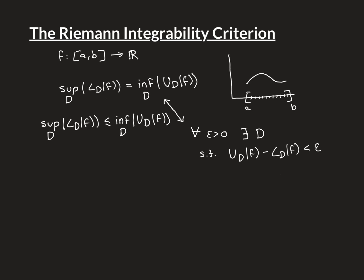How can we argue that this inequality is true? We can do a simple proof by contradiction. Let's call this supremum S for short, and this infimum I — not to be confused with the I that we used previously to mean integral. If we assume the opposite for the purpose of contradiction, we'll be assuming that I is strictly less than S. Plotting that on the picture, we'd have I here and S here.